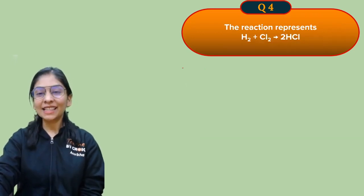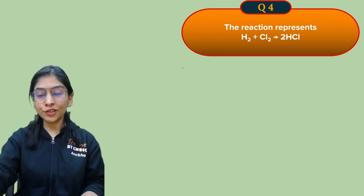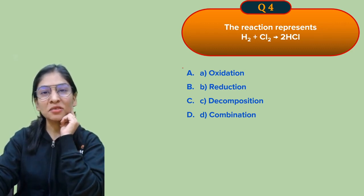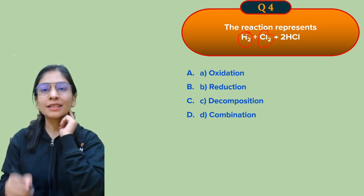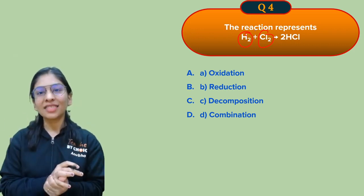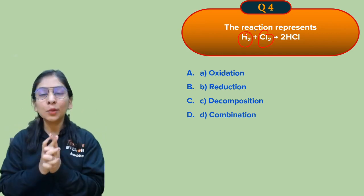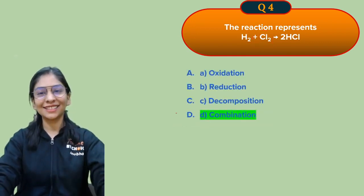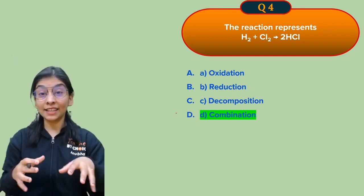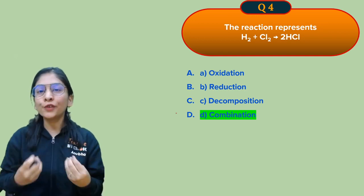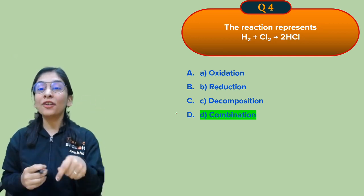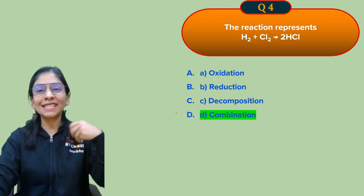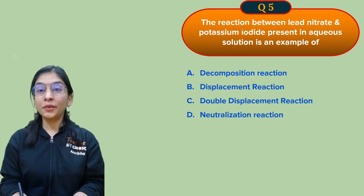Question four: the reaction H₂ + Cl₂ → HCl — what type of reaction is this? When two or more substances react with each other to give a single product, that is a combination reaction. Two things combine to give one product — so this is definitely a combination reaction. You do not even need to think twice about it.